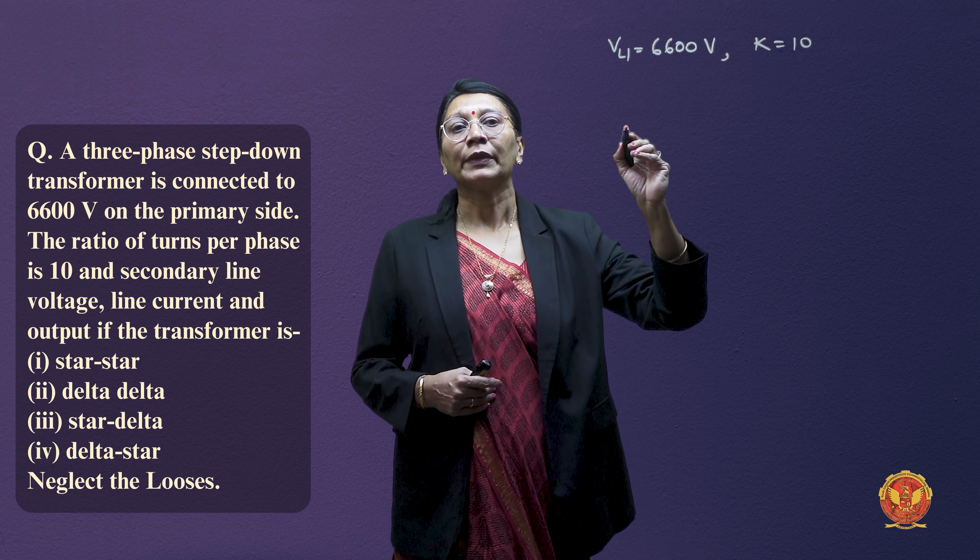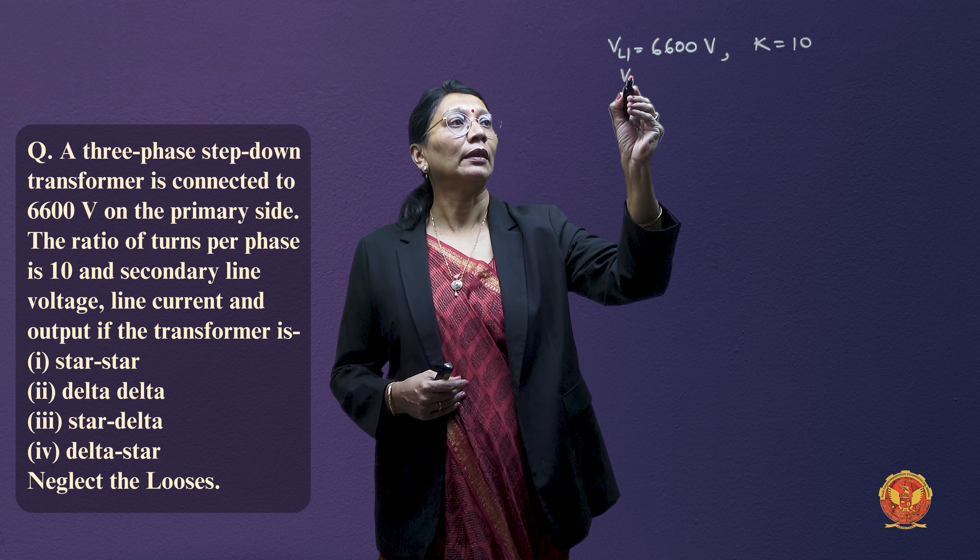Let us try one problem with the various combinations of a 3-phase transformer. We have a 3-phase step-down transformer connected to 6600 volts on the primary side. The turn ratio is equal to 10, and the line current drawn from the main on the primary side is 25 A. We have to find the secondary line voltage VL2 and secondary line current IL2.